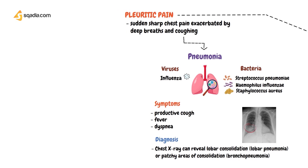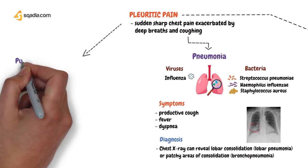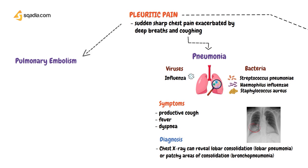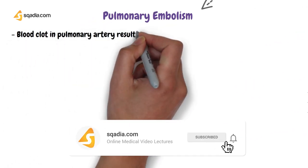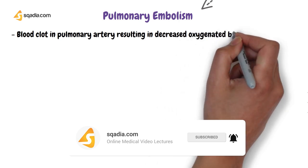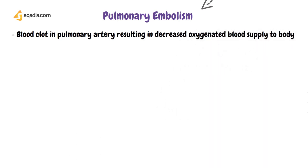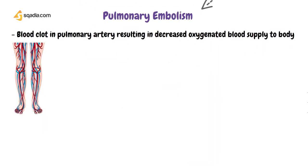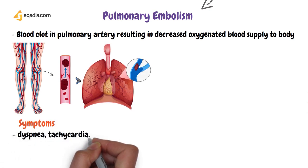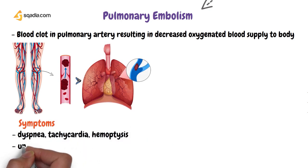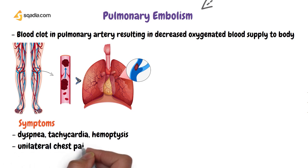Another cause of pleuritic chest pain is pulmonary embolism, which occurs due to a blood clot in the pulmonary artery resulting in decreased oxygenated blood supply to the body. The embolus responsible for blockage originates from the deep vein of the legs, breaks off, and becomes lodged in a branch of the pulmonary artery. Symptoms include difficulty breathing, tachycardia, coughing up of blood, and one-sided chest pain.